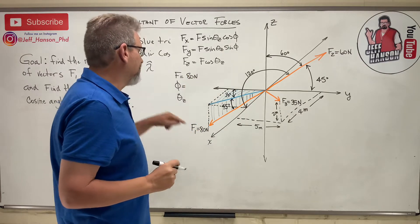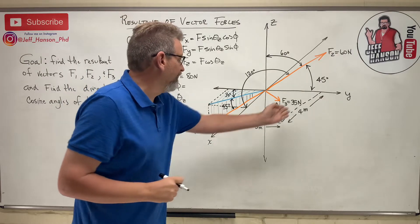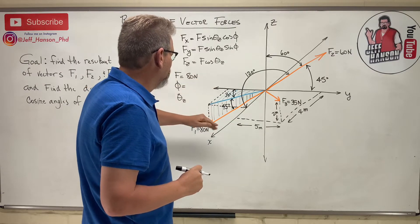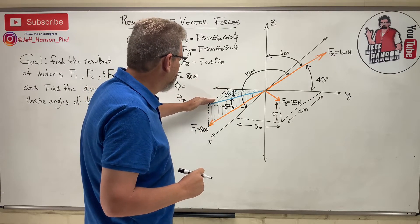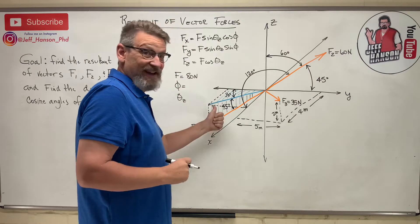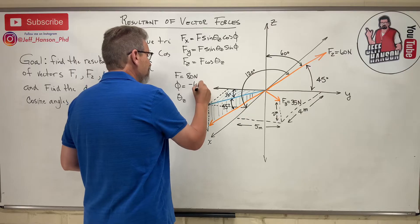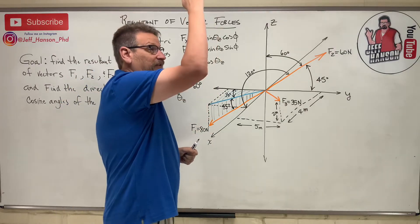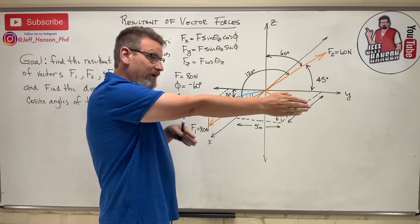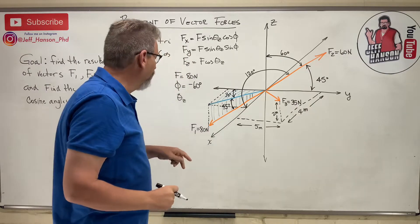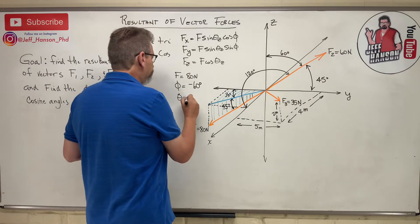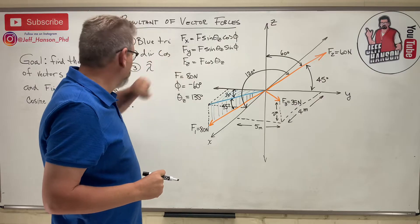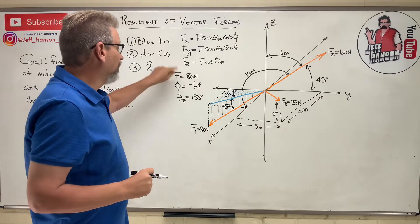For φ: from the x-axis going positive, we go back 90 to get there and then come back 30, so the angle from here is 30 degrees, making φ negative 60 degrees. For θ_z: from positive z, I go 90 degrees to get to the floor, and this vector goes into the floor another 45 degrees, so θ_z equals 90 plus 45, which is 135 degrees.